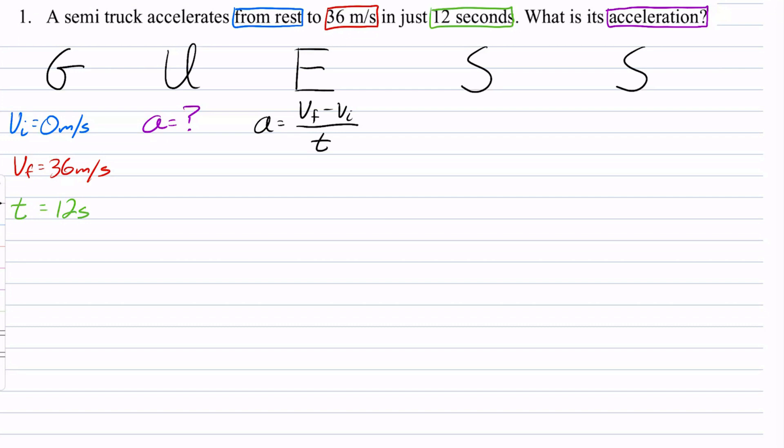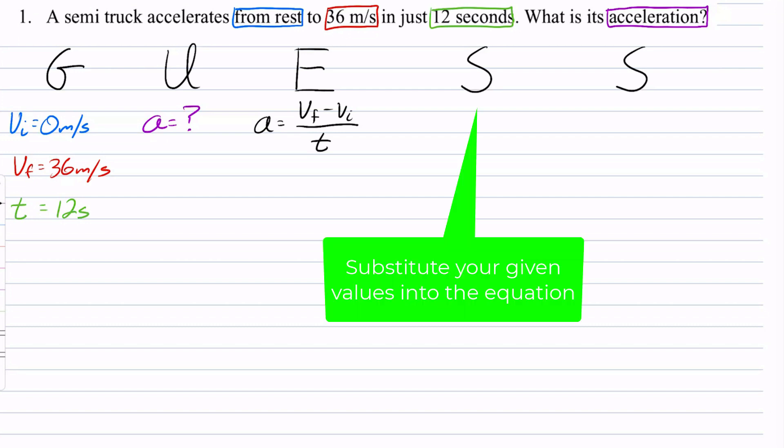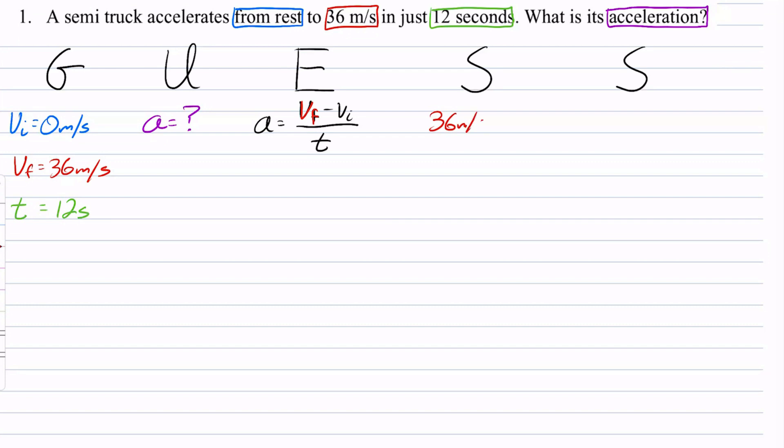And so I'm going to substitute in the values that I have. So I have a V final of 36 meters per second. I have a V initial of 0 meters per second.